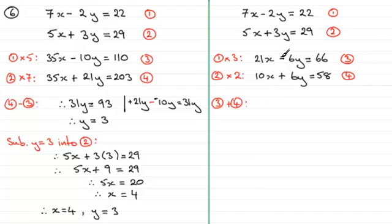So if we do 3 add 4, we've got 21x then plus 10x, so that's going to be 31x. We've got minus 6y, and we are adding plus 6y. So we've got two positives here, so minus 6y plus 6y does indeed give us 0. It eliminates the y's. And then adding 66 and 58 together gives us 124.